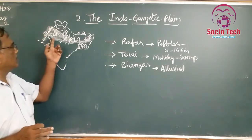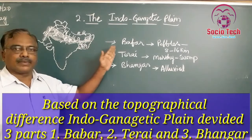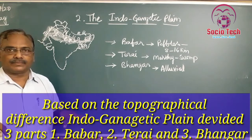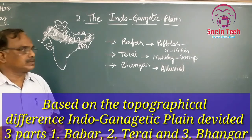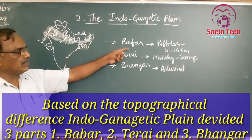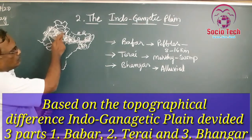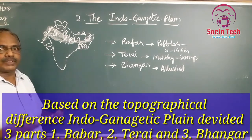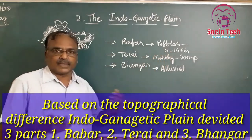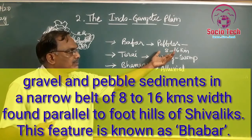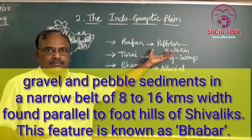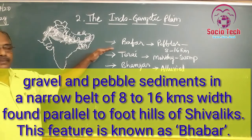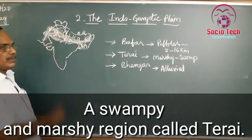The plain is again divided into three parts based on topographical differences. The first is Bhabar, situated at the foot of the Shivalik hills from west to east. It is eight to sixteen kilometres wide — a pebble- and gravel-studded coarse zone that is called Bhabar.